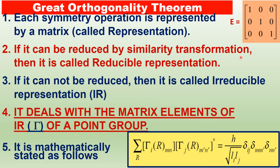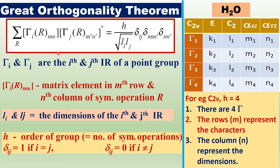Why are irreducible representations important? Because the Great Orthogonality Theorem deals with the matrix elements of irreducible representations of a point group. For example, a 3×3 matrix has 9 matrix elements. The Great Orthogonality Theorem is a mathematical theorem, and this is its mathematical form.